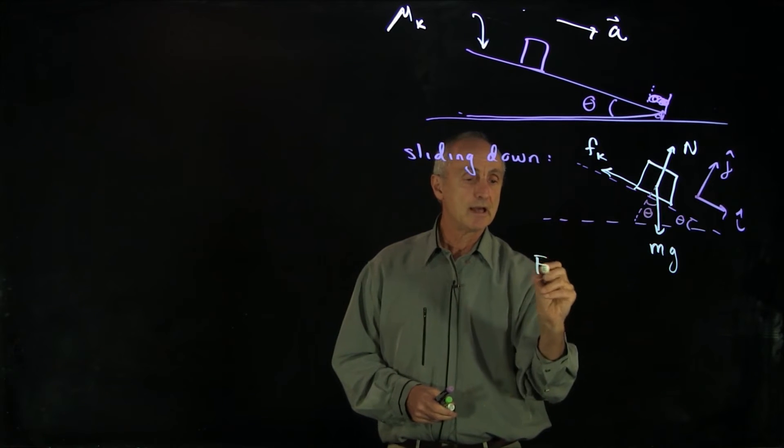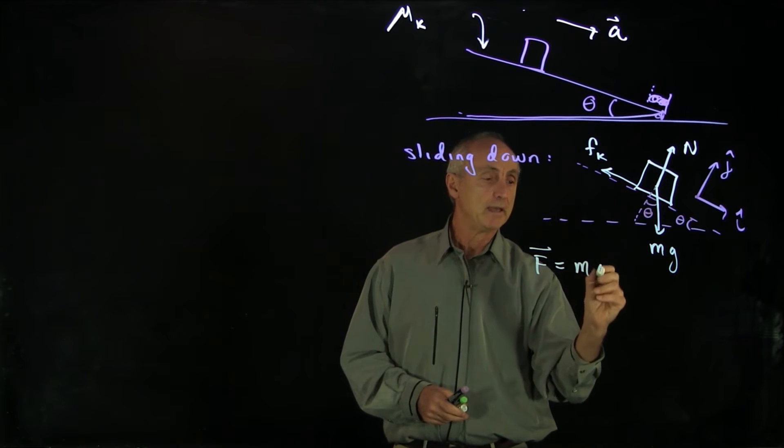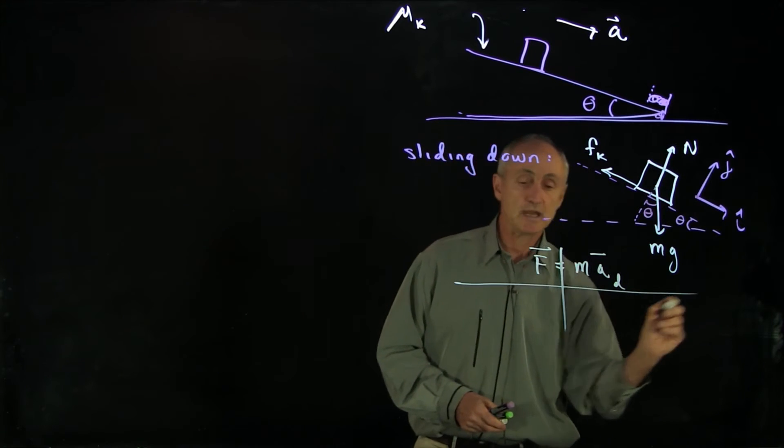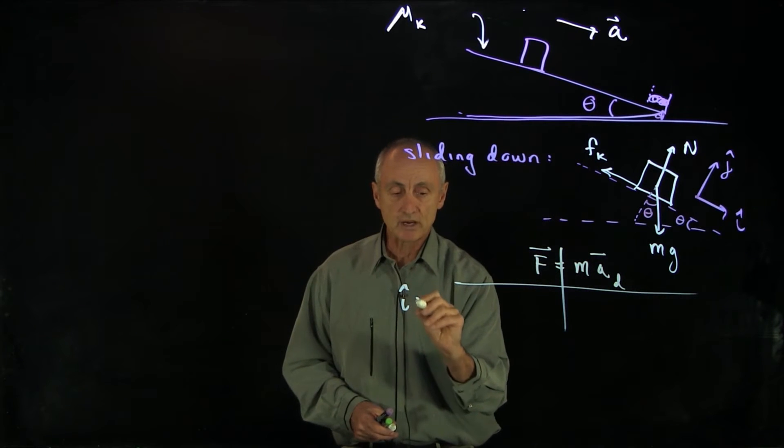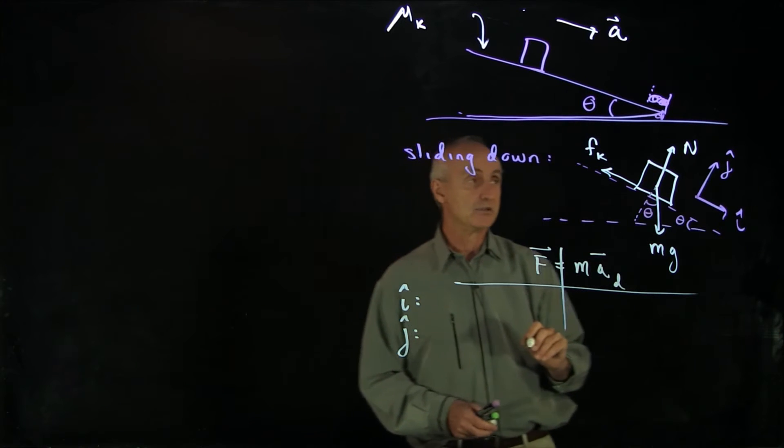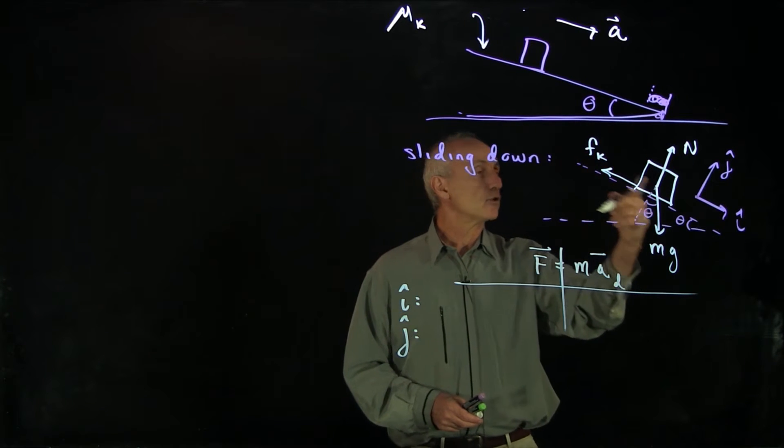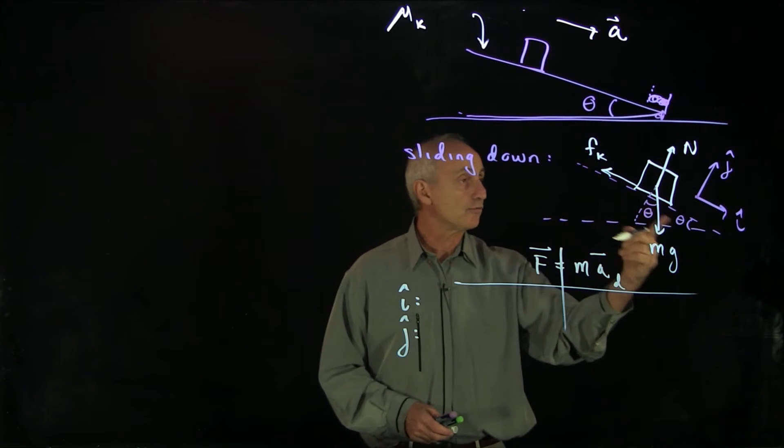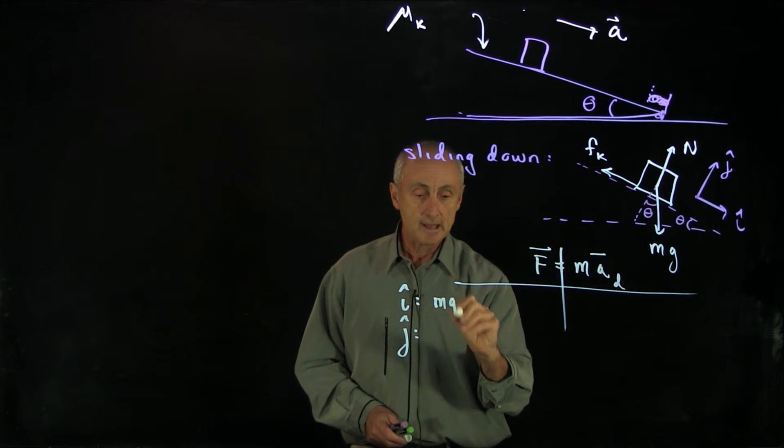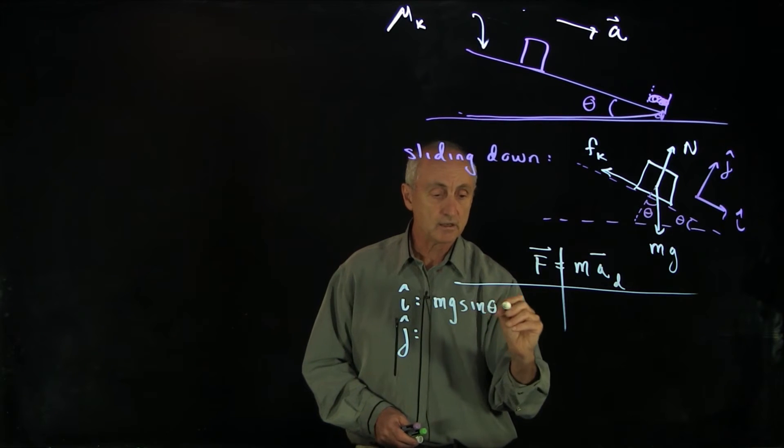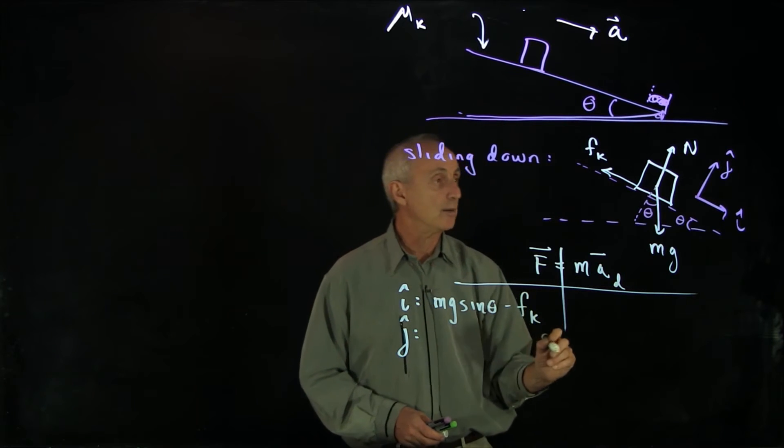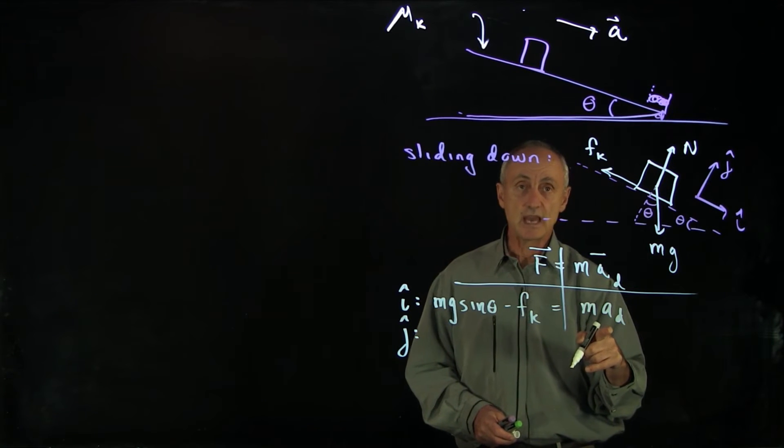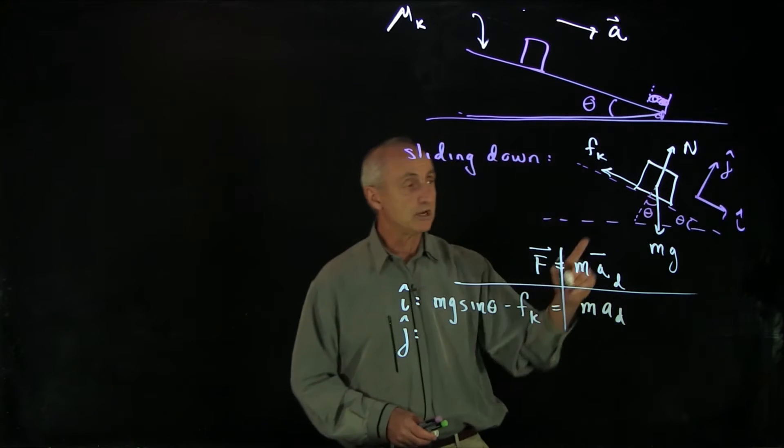We'll write down F equals ma, and I'm going to indicate a d for the acceleration downwards. We have two directions to analyze, the i-hat and j-hat directions. In the direction tangent to the surface, we have a gravitational force downward, mg sine theta, minus the kinetic friction force opposing that motion, and that's equal to ma_d, where a_d is the x component of the acceleration.